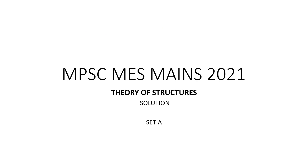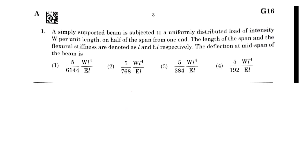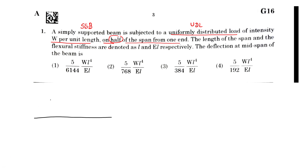We'll be covering the theory of structures solutions, taking questions from Set A in serial order, questions 1 to 11. Question 1: A simply supported beam is subjected to a uniformly distributed load (UDL) of intensity w per unit length on half of the span from one end. It doesn't matter which end since the UDL covers l/2 from either side equally.